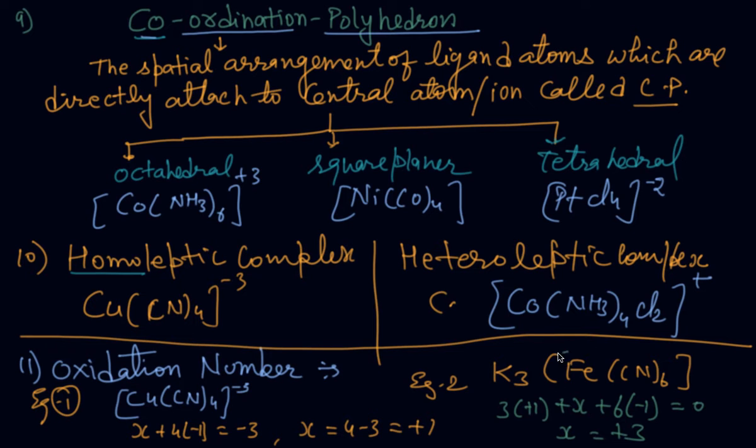Second example which I have taken K3Fe(CN)6. Then potassium are 3, its valency is plus 1. Iron we have to find out, represent by X. Cyanide are 6, its charge is minus 1, equal to on the bracket no charge, so it is coming equal to 0. And finally when I solve it, I am getting X is equal to plus 3. So this will be given in the roman when we put the name.